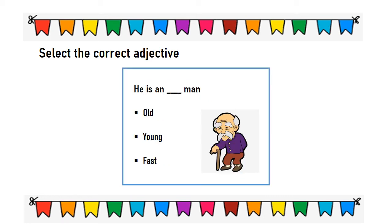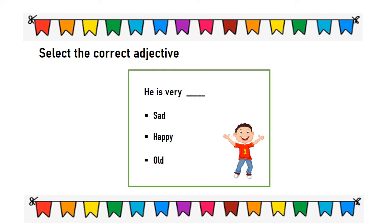He is an old or young or fast man? He is an old man. He is very sad or happy or old? He is very happy.